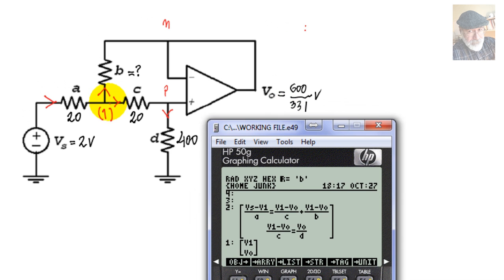KCL for node 1. Currents going in: Vs minus v1 divided by a, which is 20 but I'm writing a. That is equal to the two currents leaving the node. One of them is v1 minus vp, but vp is equal to vn, and vn is equal to v0. So this is v1 minus v0 divided by C. Plus the other current through resistor B: v1 minus v0 divided by B. That is KCL 1.